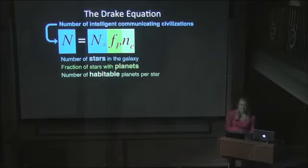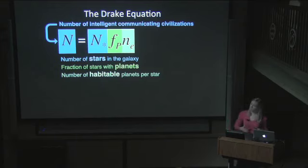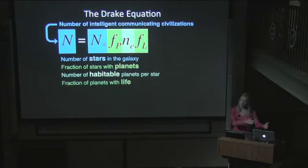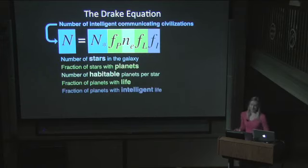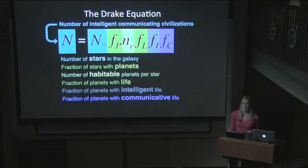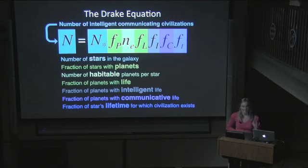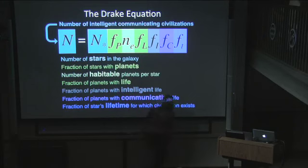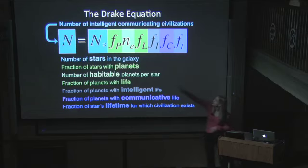The next term is: for the stars that have planets, how many potentially habitable planets do those stars have? Is it rare or very common? The next term is: given you have an abode for life, is there actually life on that planet? Then, if there's life there, is that life intelligent — what fraction of life actually becomes intelligent? What fraction of that life chooses to communicate with other civilizations? And the last term, which might be a little scary compared to the current state of humans on Earth, is how long does that civilization actually manage to exist during the planet's lifetime — is there a point at which civilizations become so intelligent that they immediately wipe themselves out, or are they able to survive until the star itself dies?